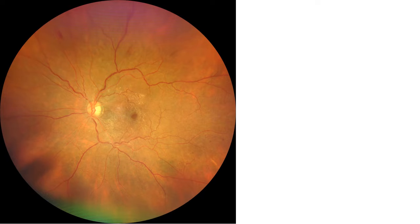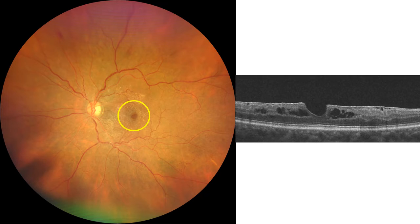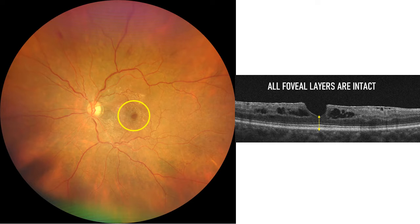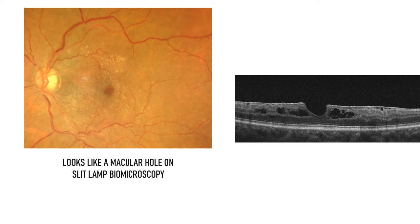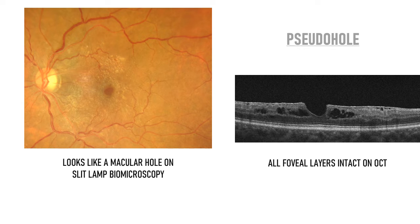Now let's see another fundus photo. This is again the left eye of another patient. Here again you can see a circular reddish area in the center. Let's see what the OCT looks like. In the OCT, you can see that all the layers of the retina at the fovea are intact — there is no defect. So this appearance of the macula on clinical examination, usually on slit lamp biomicroscopy, where it looks like a macular hole but on OCT the retinal layers are found to be intact, is known as a pseudo hole, because it might appear like a macular hole but that is a false appearance.